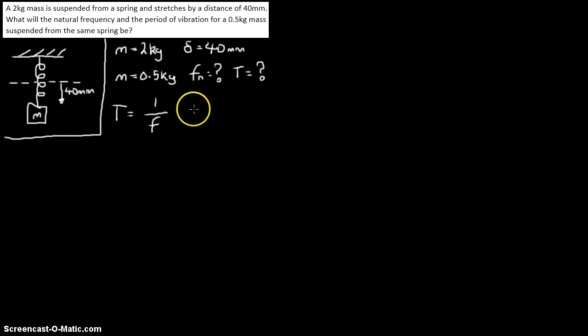I know that omega, our angular frequency, is equal to 2 times pi times the frequency f. Now, we can rearrange that equation here and put that equal to omega divided by 2 pi. So, that sorts out our time period and our frequency. Now, we need to find an equation for omega.